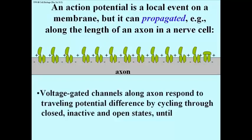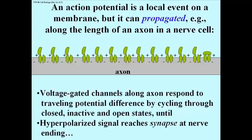So these are voltage-gated channels that lie along the axon and they respond to traveling potential difference by cycling through those three conformational states I pointed out before. And they do this again until that hyperpolarized signal reaches the synapse at the nerve ending.